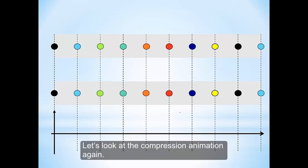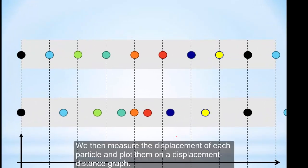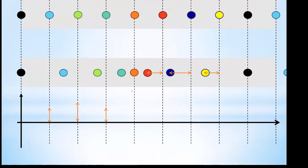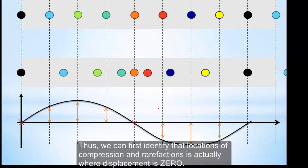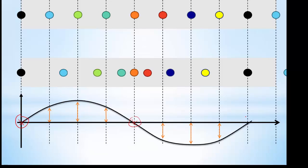Let's look at the compression animation again. We then measure the displacement for each particle and plot them on the displacement-distance graph. These particles have positive displacement as they have moved towards the right, and notice they have different displacements — the light green has moved a lot, as has the dark blue, compared to the red and yellow. If you plot the graph, you find zero displacement at the compression and rarefaction centers, forming a wave-like pattern. We can identify the locations of compression and rarefaction where the displacement is zero. So this is a rarefaction, this is a compression, and this is also a rarefaction.